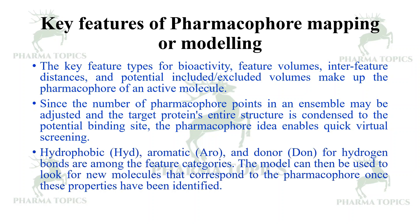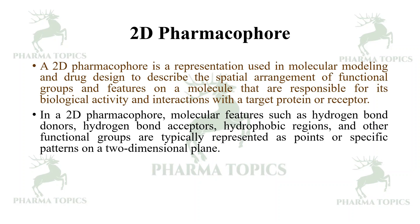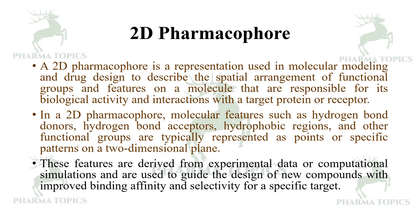A 2D pharmacophore is a representation used in molecular modeling and drug design to describe the spatial arrangement of functional groups and features on a molecule that are responsible for its biological activity and interactions with the target protein or receptor. In 2D pharmacophore, molecular features such as hydrogen bond donors, hydrogen bond acceptors, hydrophobic regions, and other functional groups are typically represented as points or specific patterns on a two-dimensional plane, derived from experimental data or computational simulations.